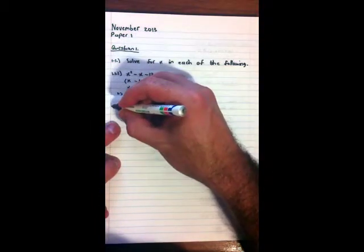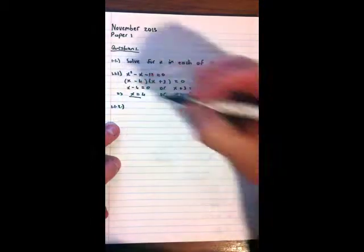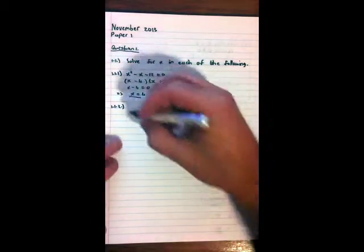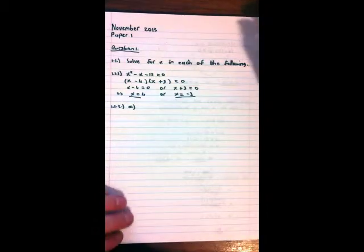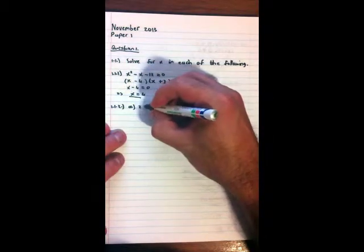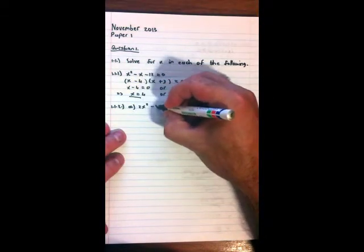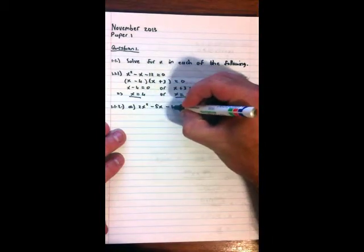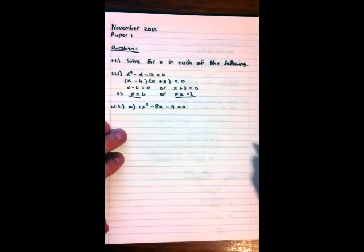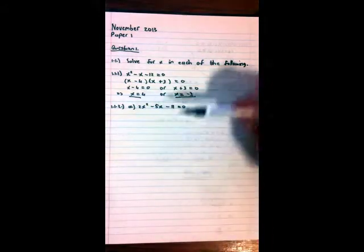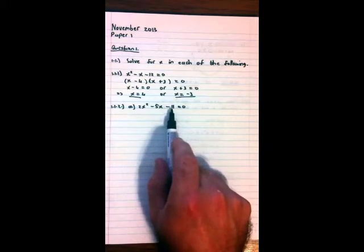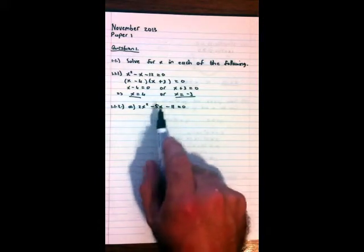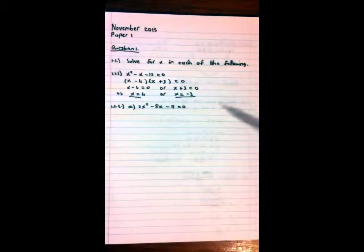Next question. 1.1.2. And this is an A and a B part to it. A. 2x² - 5x - 11 = 0. You know, this one we could try to do the same as we did in the previous question. But it looks like because of prime numbers here, it won't have nice factors. So we're going to use the quadratic equation to do this one.